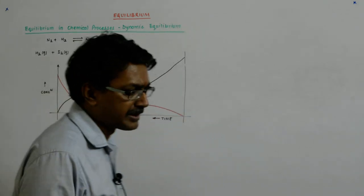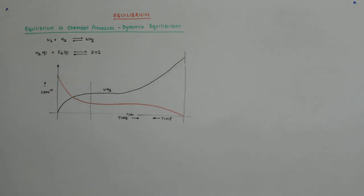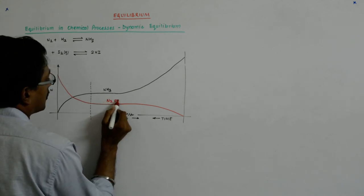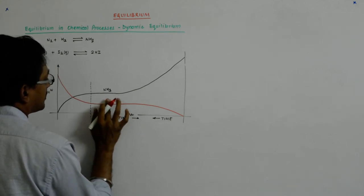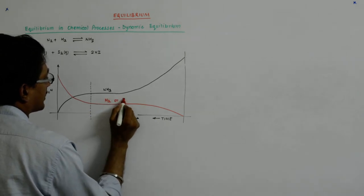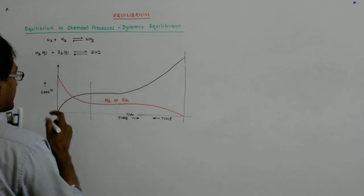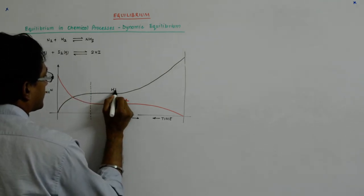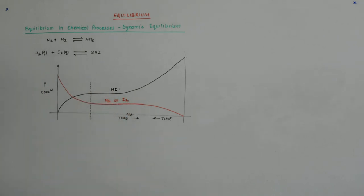Okay? The equilibrium concentrations would have been the same. That's all. So don't get confused with that. This is either N2 or, this is either H2 or I2. Or I2 and, and, and. This is HI. Okay? Okay? Fine? Okay.